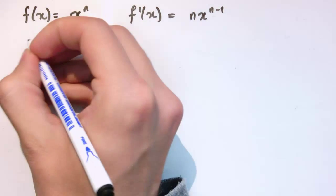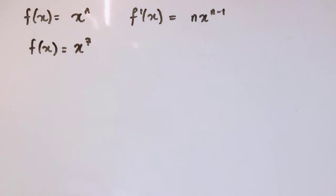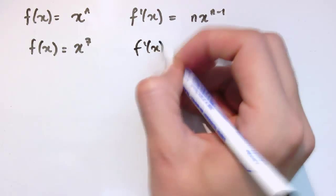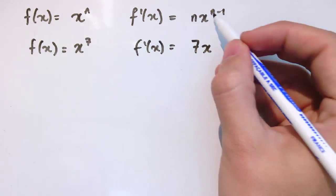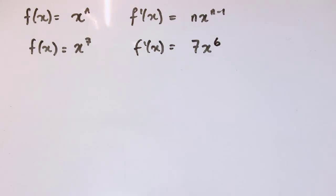So for example, if I took n equals 7 in this rule, if I had x to the 7 and I wanted to differentiate it, well n is 7, so I just need to replace n with 7 in this formula. So I have 7x to the, and now n minus 1 is 6, so it would be 7x to the 6.